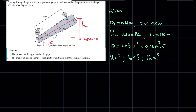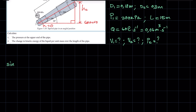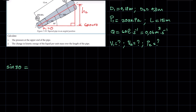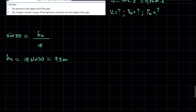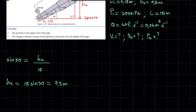Since h2 is opposite the angle and we have the hypotenuse, we need to use sine. So sine 30 equals h2 over 15 meters. Solving for h2: h2 equals 15 times sine 30, which gives us 7.5 meters. So now we have both h1 and h2. We still need v1 and v2, and once we have those we can apply Bernoulli's theorem.